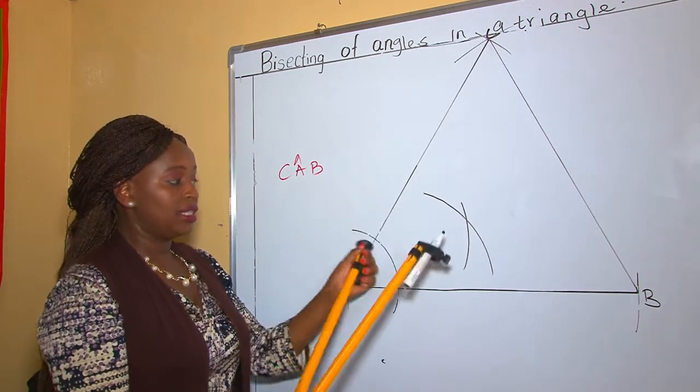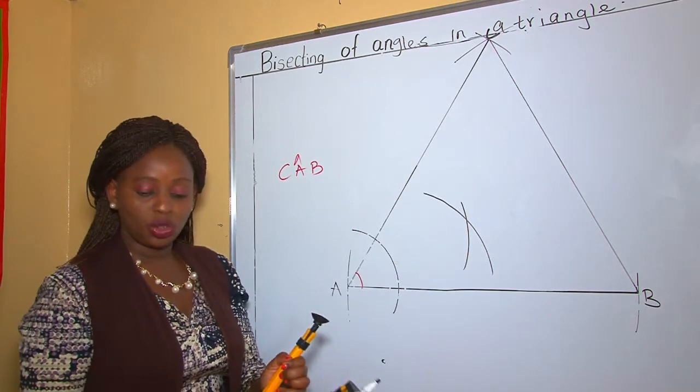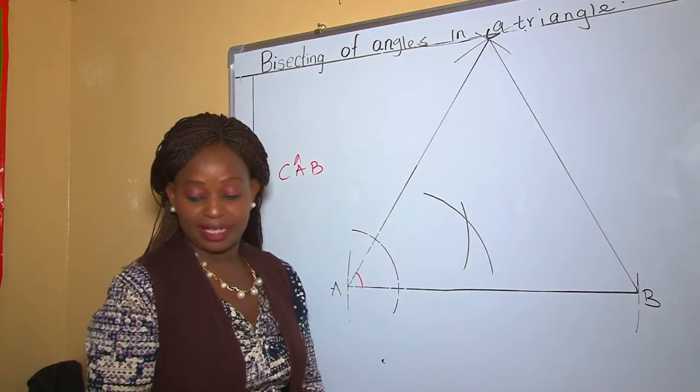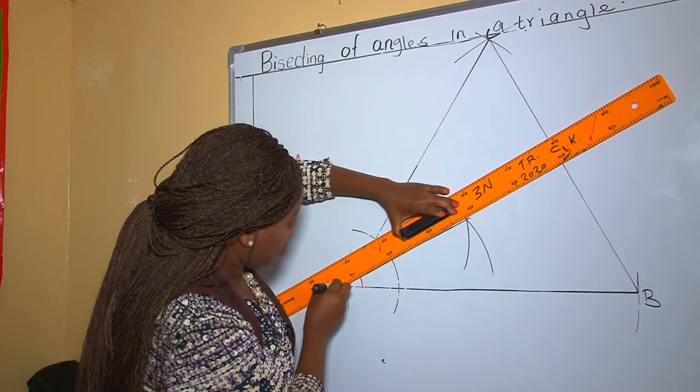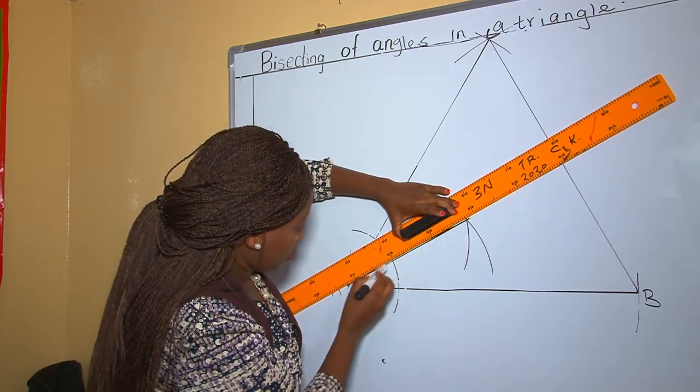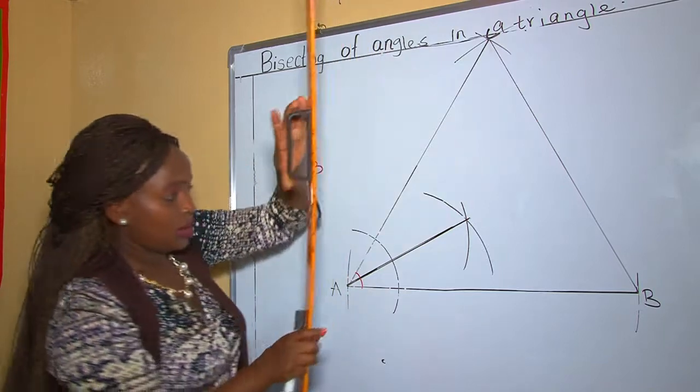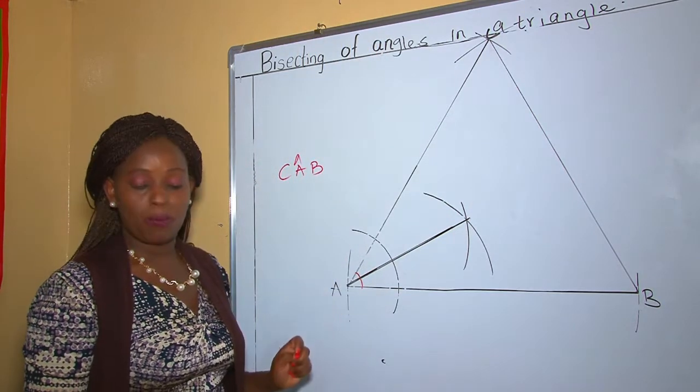The two arcs intersect at a given point. Join the two arcs now using a straight line. We are bisecting this angle into two equal parts.